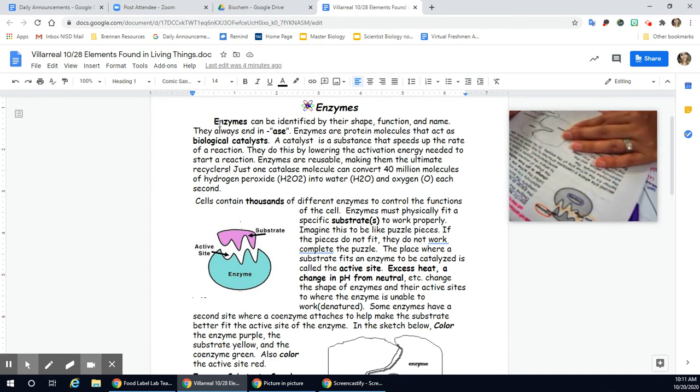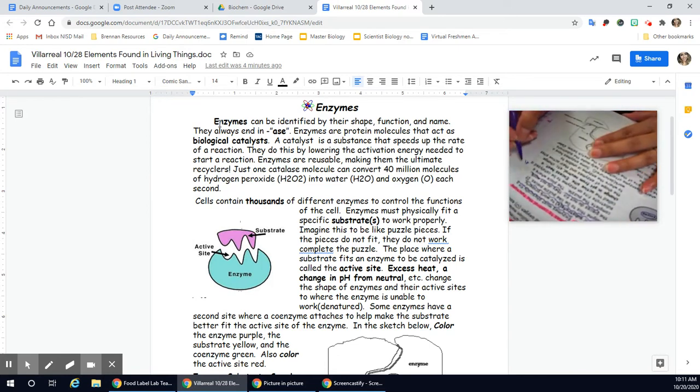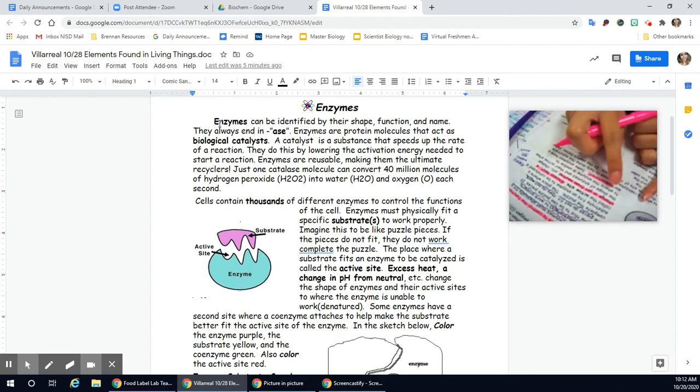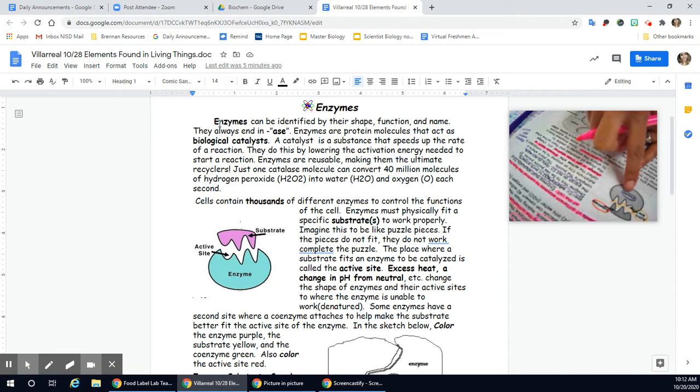The place where they fit an enzyme to be catalyzed is called the active site, which I had just explained. Excess heat. What does excess mean? So excess means too much. So too much heat. I'm going to highlight this. Too much heat or a change in pH from neutral. So if it gets too acidic or too basic, it can change the shape of the enzymes and their active sites to where it's unable to work. This is now called denatured, when it's no longer able to fit. So if you heat it up or if the environment is too acidic, if it's not neutral, the environment has changed, then I can change my shapes of my enzymes and it will no longer fit that substrate. It is no good. We call this denatured.